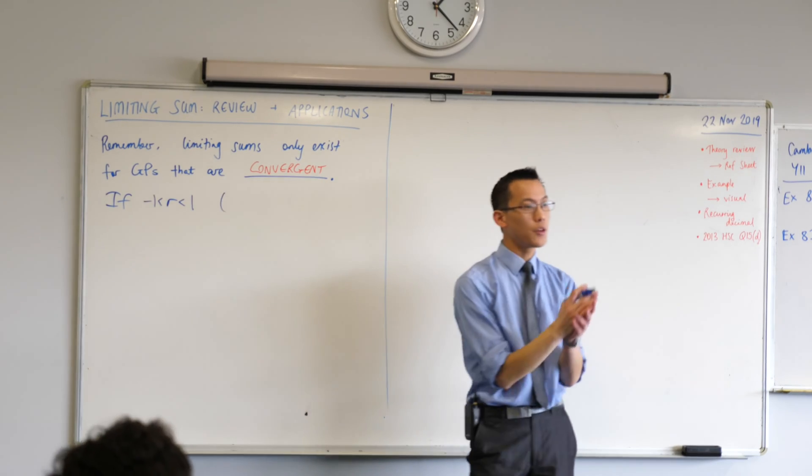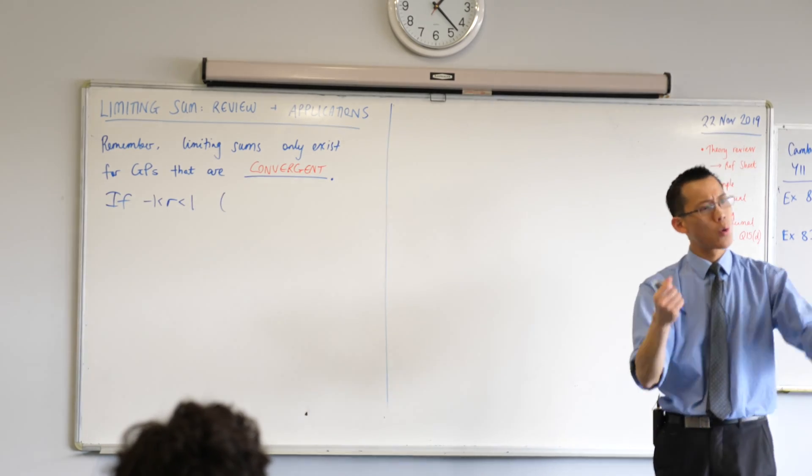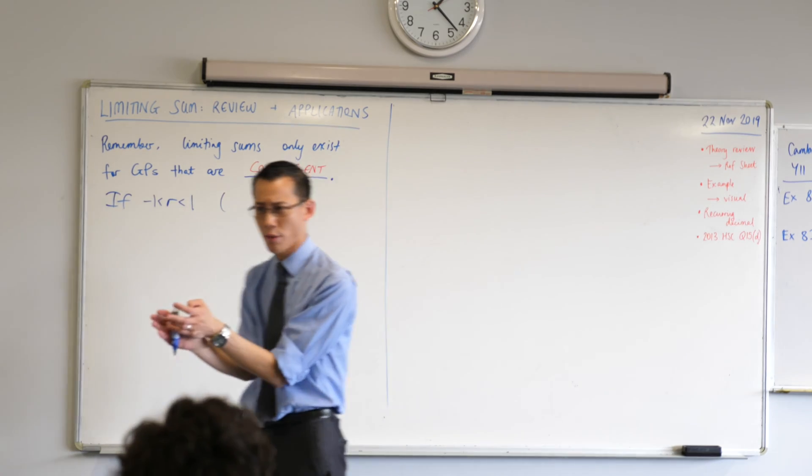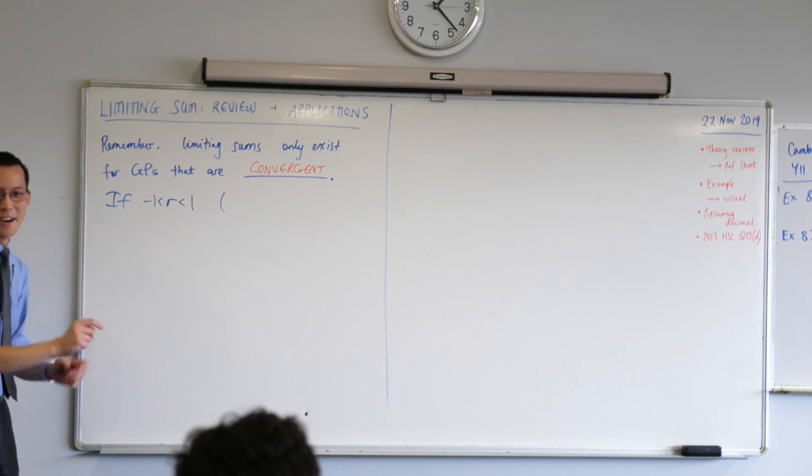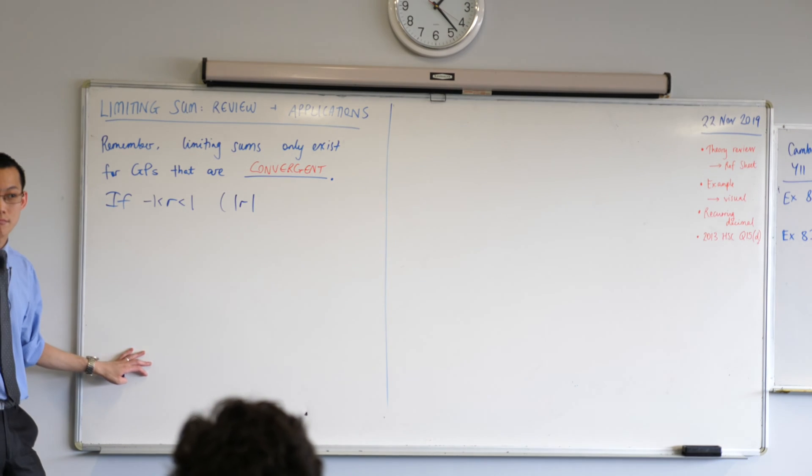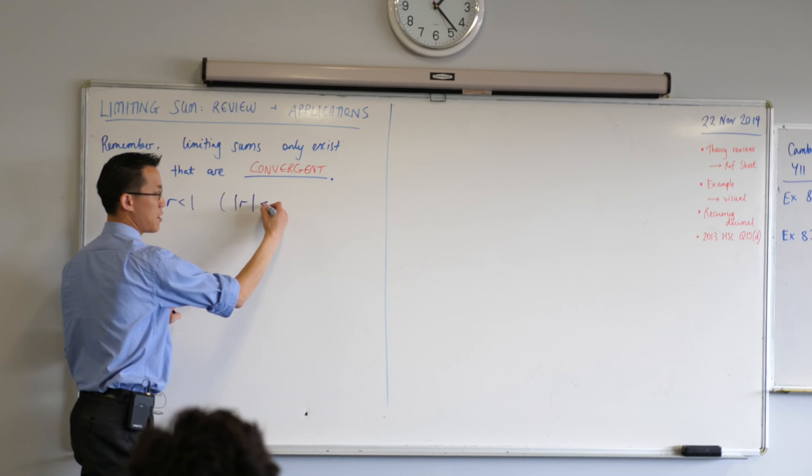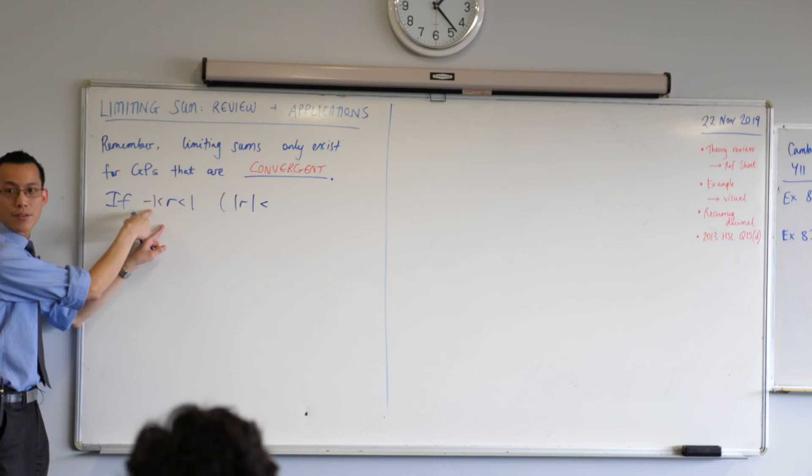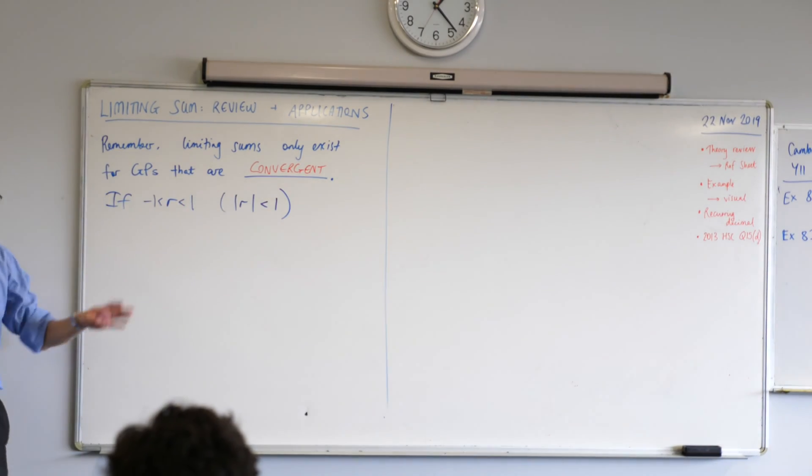Now, there is another way that we can say this: negative one is less than r, is less than one. It requires us to remember our absolute value notation. Did you get this in your definition on Monday? The absolute value of r, we want it to be - because absolute value means you don't have to worry about negatives - we actually want it to be smaller still, but this time we're sort of capturing the negative in one here. Does that make sense?